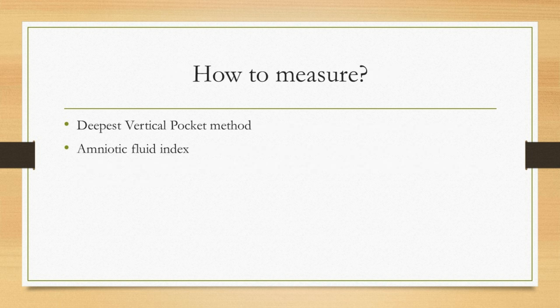So how do we measure this amniotic fluid volume? There are various methods proposed, but the two commonest used methods are the single largest pocket, or the deepest vertical pocket method, and the amniotic fluid index.